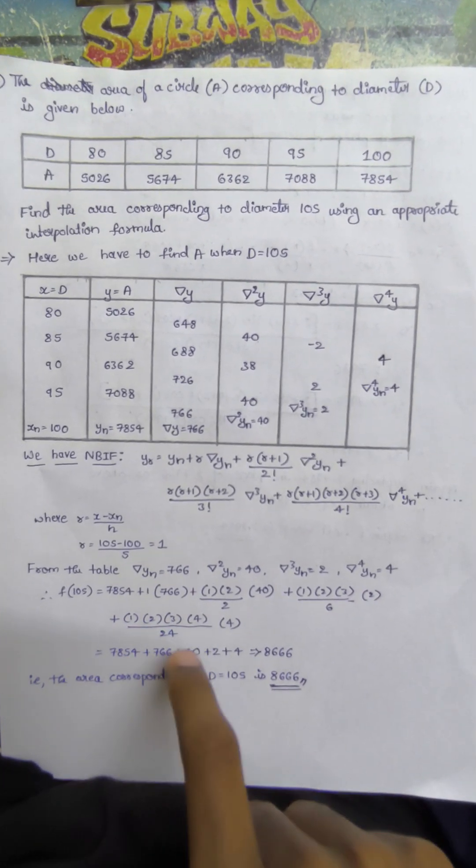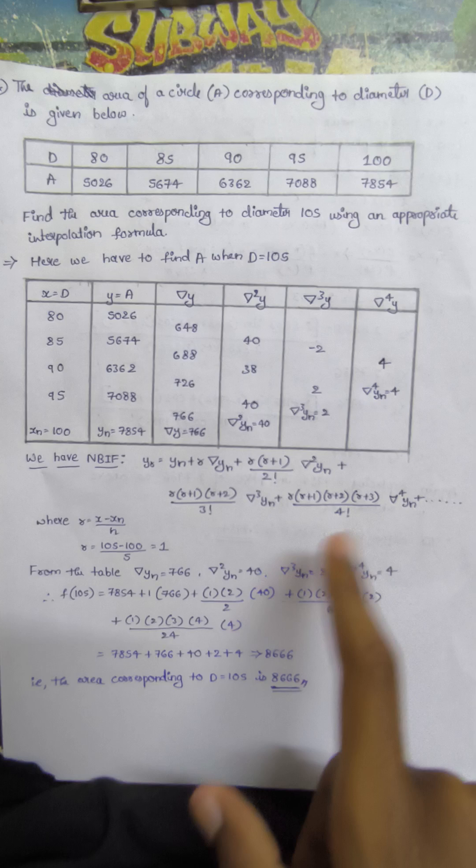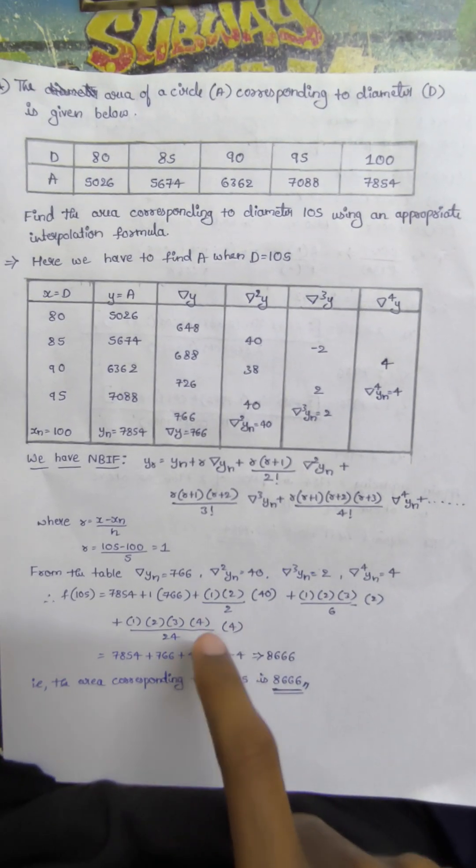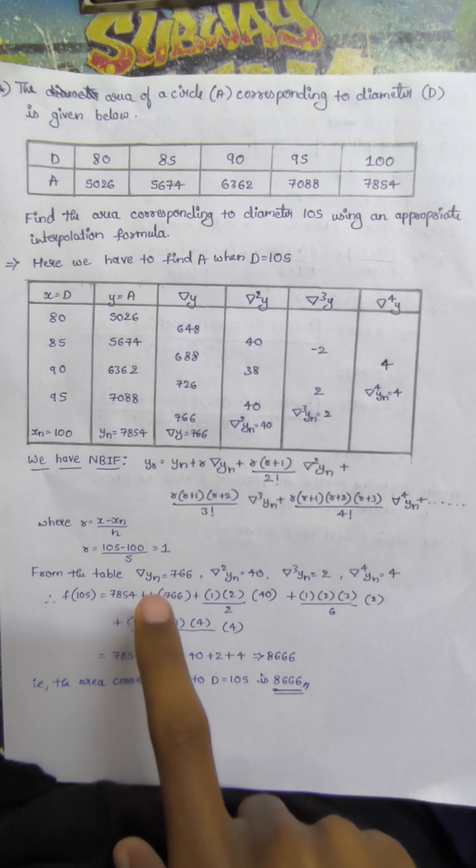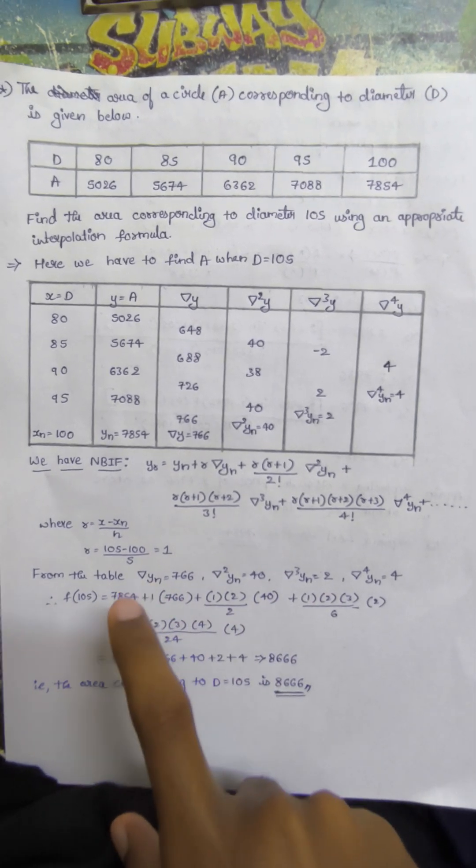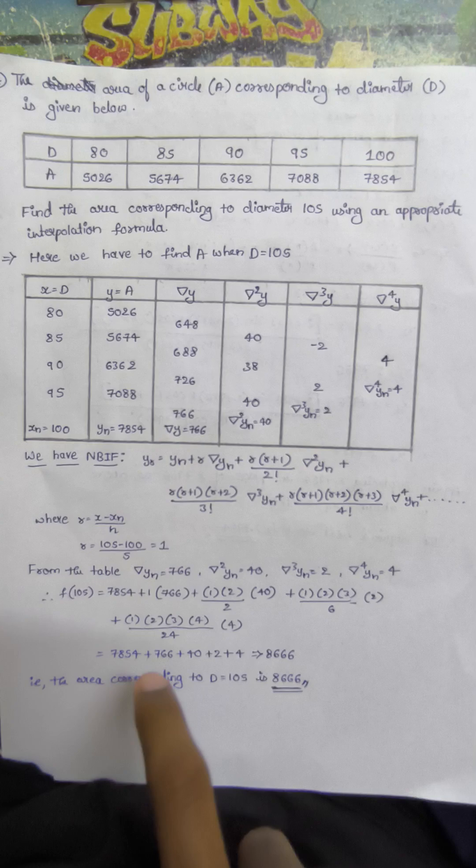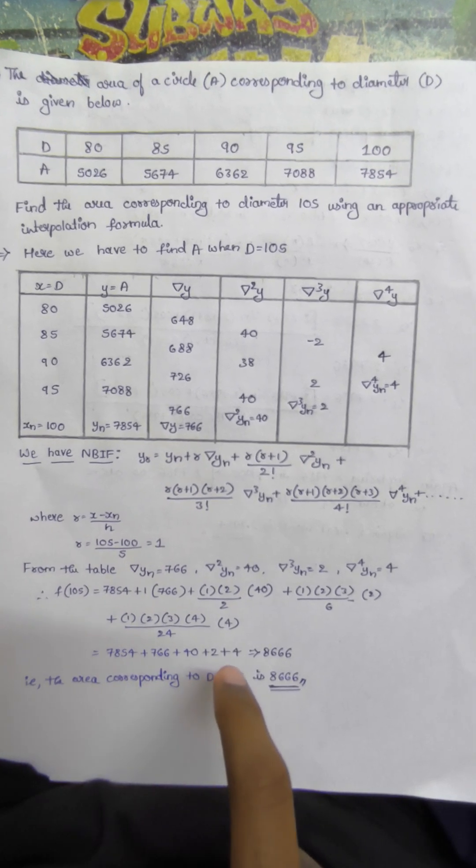4 factorial is 24, 3 factorial is 6. Calculating: 7854 + 766 + 40 + 2 + 4. The total answer is 8316.